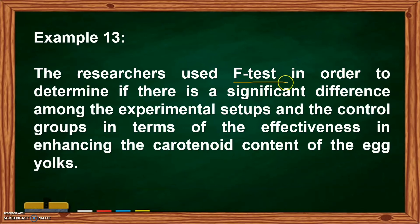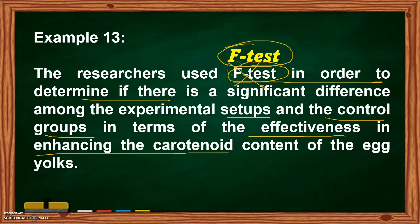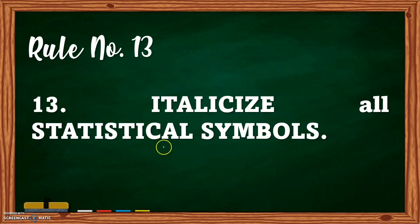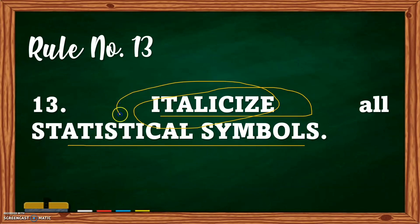Example number thirteen: 'The researchers used F-test in order to determine if there is a significant difference among the experimental setups and the control groups in terms of the effectiveness in enhancing the carotenoid content of the egg yolks.' What is wrong? It is the 'F-test' — it needs to be italicized. Rule number thirteen: italicize all statistical symbols. All statistical symbols such as F-test, T-test, and Z-test must be italicized.